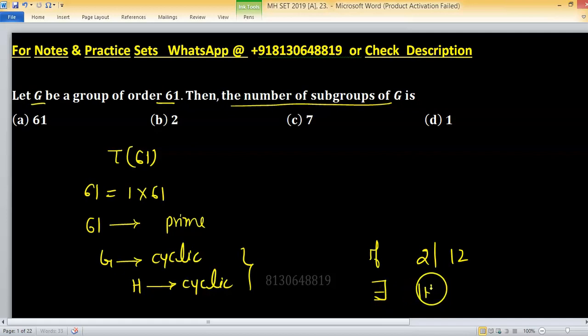But in the case when the group is cyclic, then for each divisor there exists a subgroup. Divisors of 61 are 1 and 61.